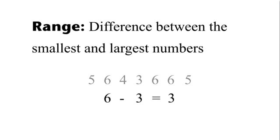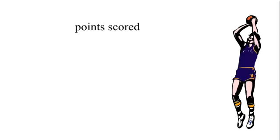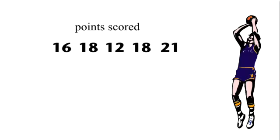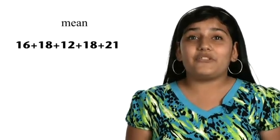That's a lot of information in a short period of time. Don't worry. Here is Trent to show another example of mean, median, mode, and range. Let's say Steve Nash plays five games for the Phoenix Suns and he scores 16, 18, 12, 18, and 21 points. We can find the mean, median, mode, and range for the given data.